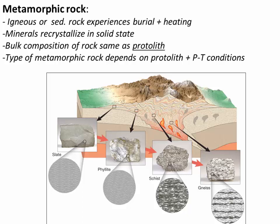A great analogy is baking a cake. You put in eggs, sugar, and flour, then you bake it, and that batter turns into something totally different — yet all of the ingredients are the same. Metamorphic rocks are essentially limitless because they depend on the protolith as well as the pressure-temperature conditions the rock reaches. Because we can have an almost limitless variety of sedimentary and igneous protoliths, and cook them to almost any pressure-temperature condition, there are really a million different recipes to make a metamorphic rock, and they're all a little bit different.